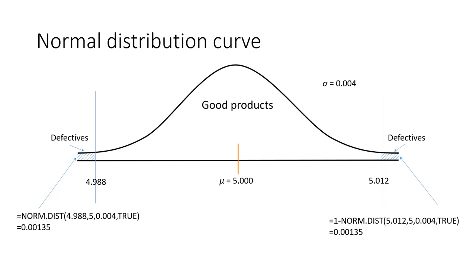The proportion on the right-hand tail is identical to the proportion on the left, because the process is currently centered — the mean is exactly 5.000 inches. This is a rare scenario because we are only allowing common causes of variation. If there were no variation and we were aiming to produce exactly 5.000 inches, every unit would be exactly that. But with common causes of variation, we get a standard deviation of 0.004 and a normal distribution curve.